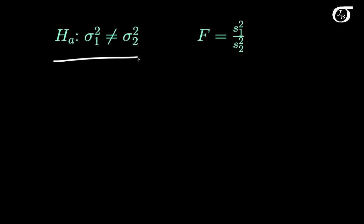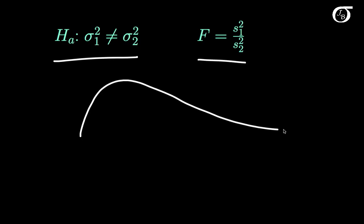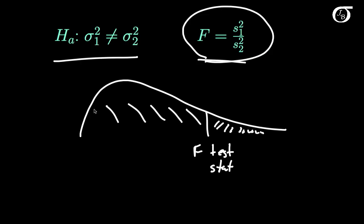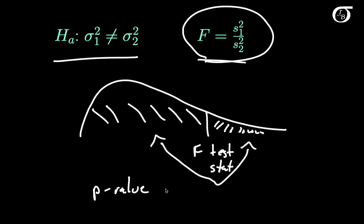If our alternative hypothesis is two-sided, then values far out in the right tail or far out in the left tail give us evidence against the null hypothesis. What we do is consider the area to the right of the test statistic and the area to the left of the test statistic, take the smaller of these two areas, and double it. So our p-value is double the smaller area, as we've done in other types of tests as well.